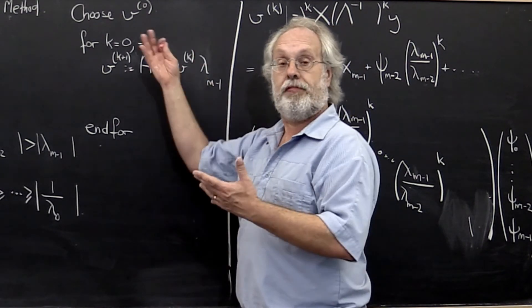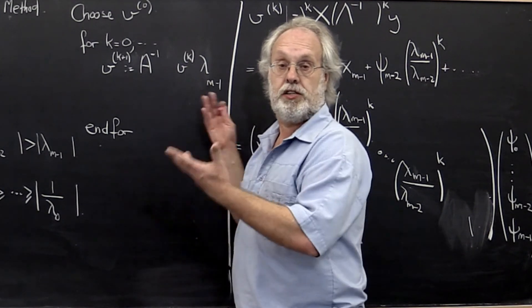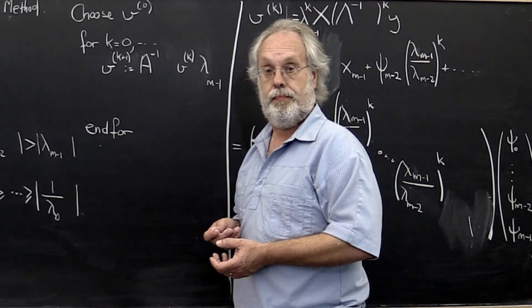And obviously we wouldn't want to do that every time through the loop. We would want to do the LU with partial pivoting up front once and then use the factors to actually solve for the vector in the linear system, right?